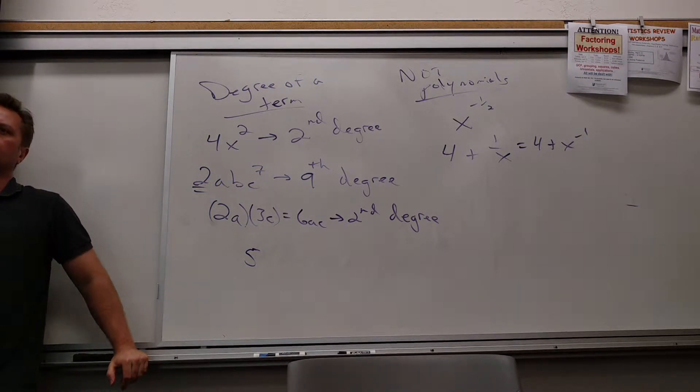First degree. So that would mean that you see a variable. Right? Because the degree is the total number of variables that you see. Well, how many variables do I see? None. Nothing. So that is a zero-degree. Zero-degree.